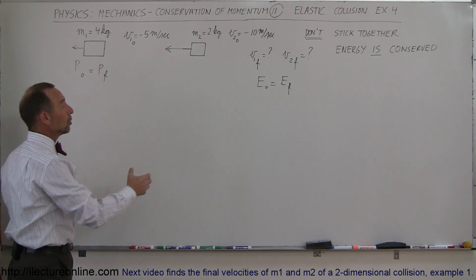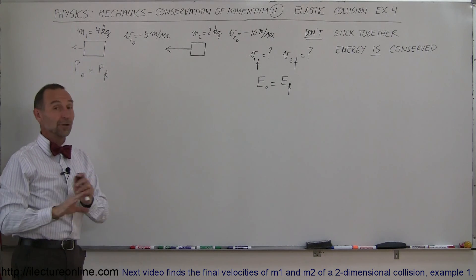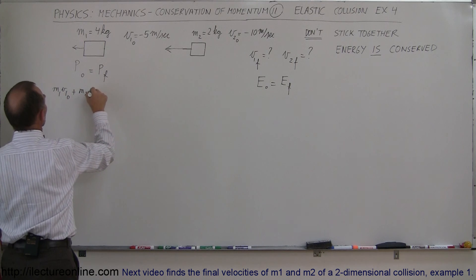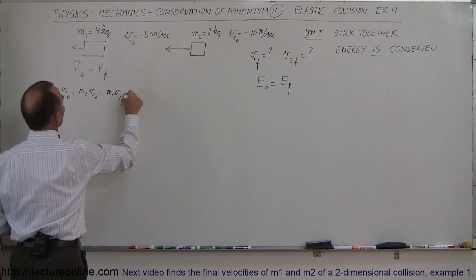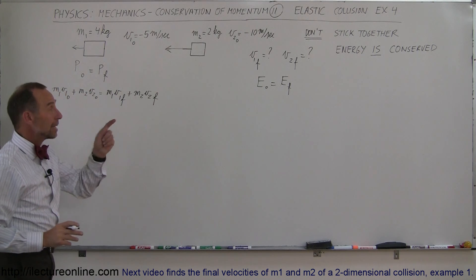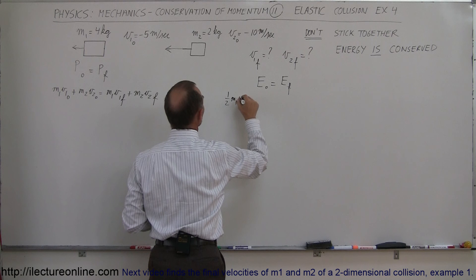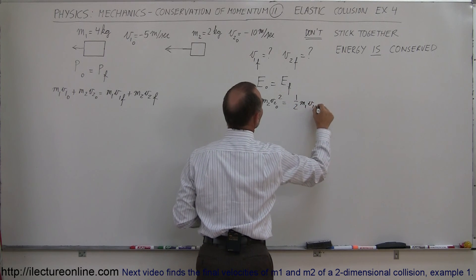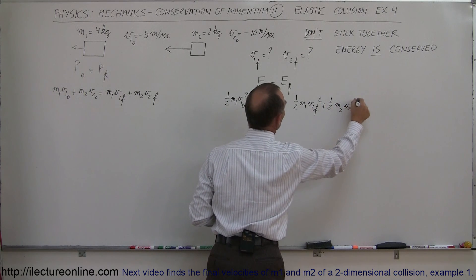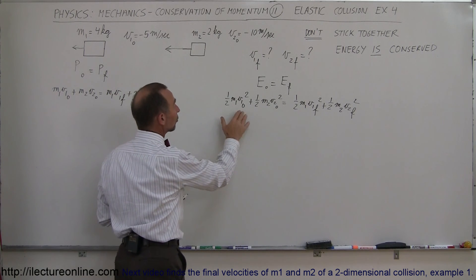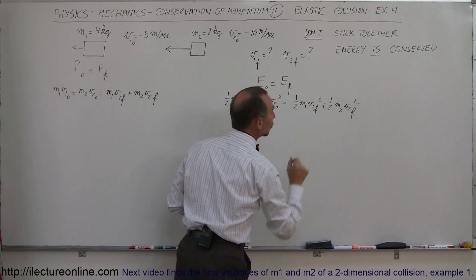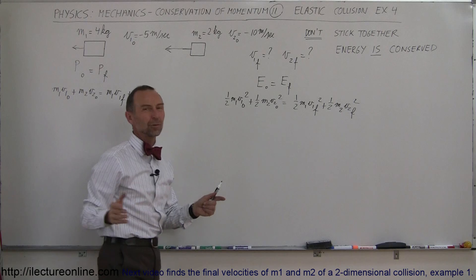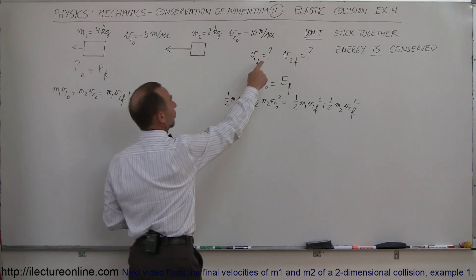Since energy is conserved, we can use the energy conservation equation, and of course we know that momentum is always conserved — no matter what, there are no exceptions to that rule. Writing the equations, we can write that m1 v1 initial plus m2 v2 initial equals m1 v1 final plus m2 v2 final. With the energy equation, we can write one-half m1 v1 initial squared plus one-half m2 v2 initial squared equals one-half m1 v1 final squared plus one-half m2 v2 final squared. Since v1 final and v2 final are the two unknowns in both equations, we can solve the two equations simultaneously.